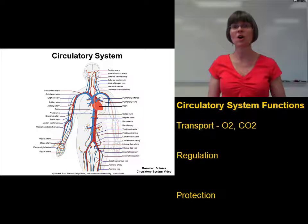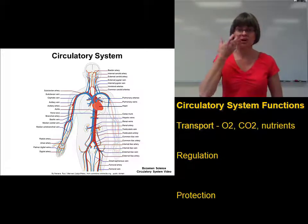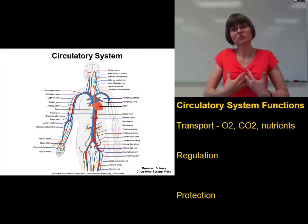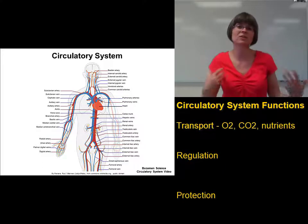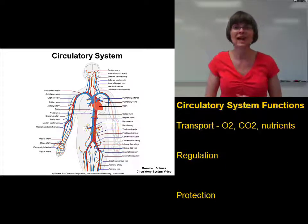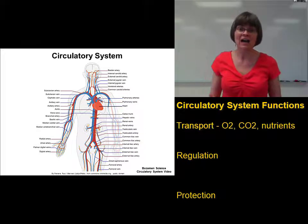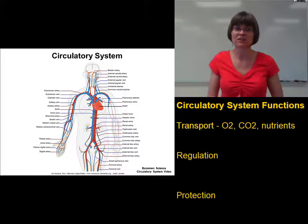The circulatory system is also important for carrying nutrients throughout the body. We take in our nutrients through our mouths, they go into the digestive system, and then those nutrients are absorbed from the digestive system into the blood. The blood carries nutrients like glucose, amino acids, fatty acids, vitamins, ions, and minerals to all your various cells.